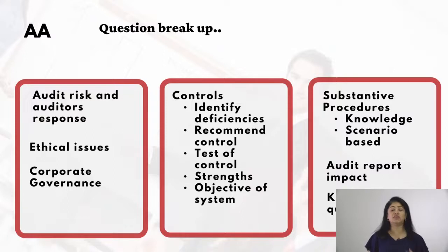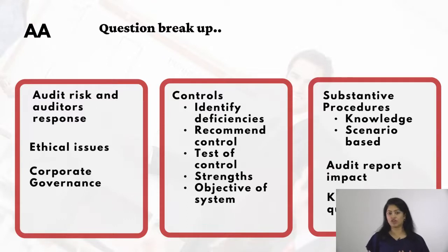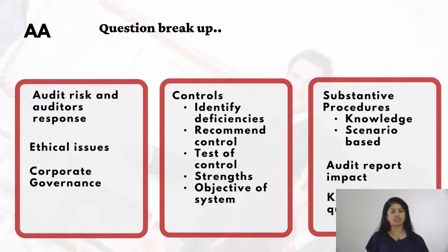Finally, there's the impact on the audit report, where you state what opinion you're forming based on unresolved issues. So guaranteed topics are: controls, audit risk, substantives, and impact on the audit report. Ethical issues and corporate governance may or may not come, but make sure you practice at least one or two questions from those areas so you're comfortable with the approach.